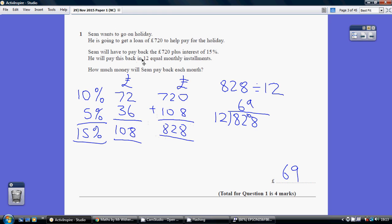Now this is being paid back in 12 equal installments. So we have to take the 828 and divide it by 12. First way to do that is using the bus stop method.